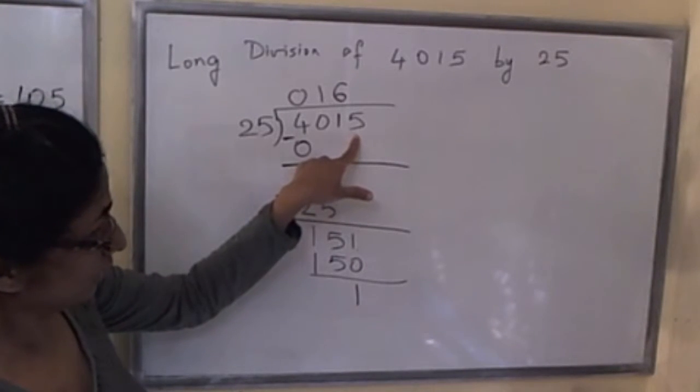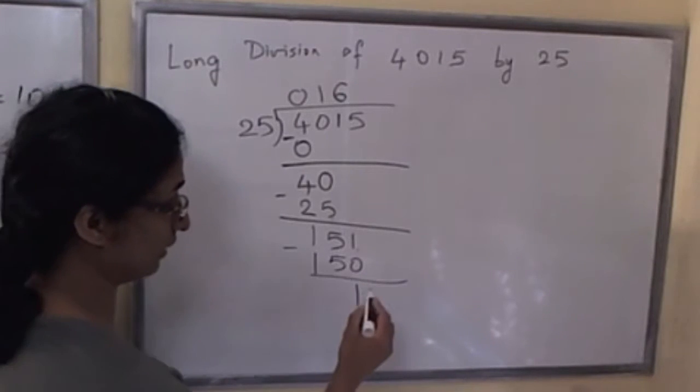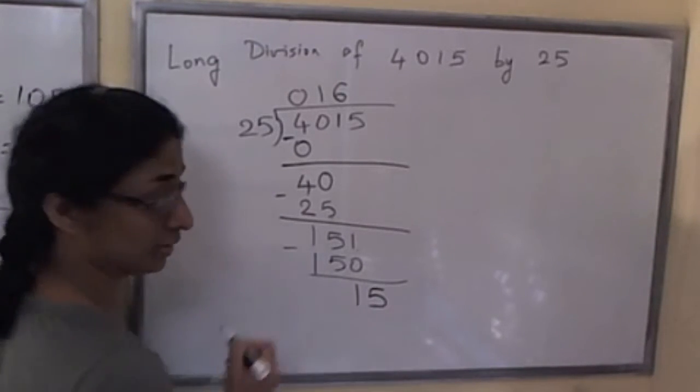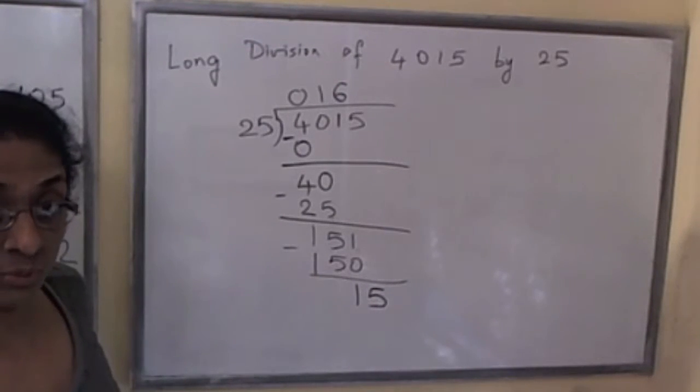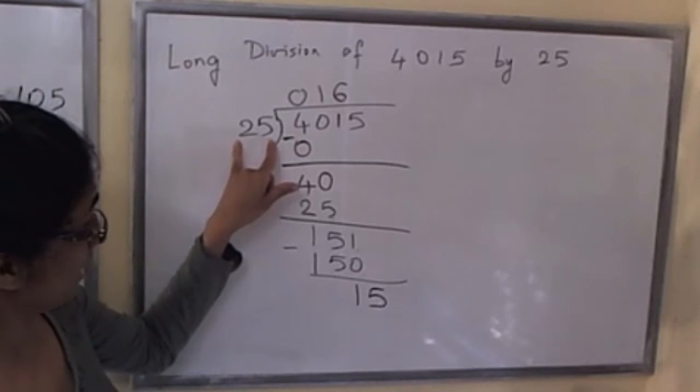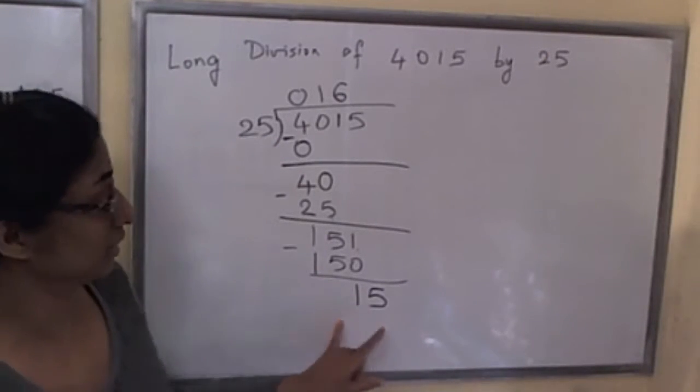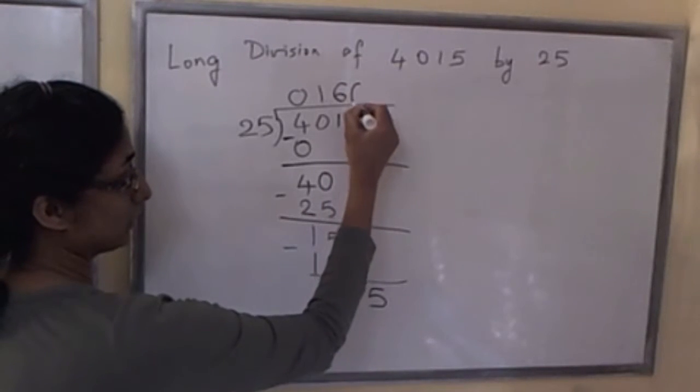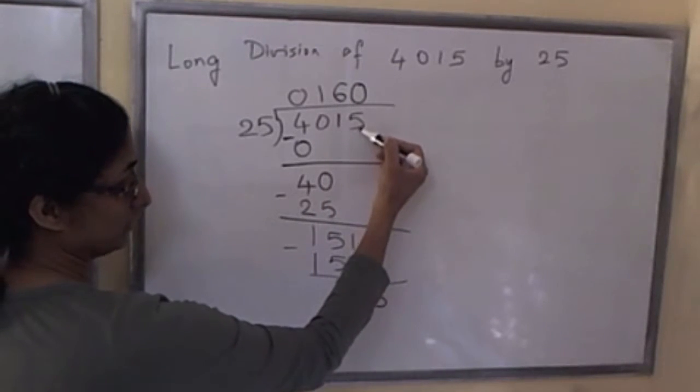And now we pull down this 5, the very last digit. 15. And now we ask the same question: what is the maximum copies of 25 in 15? Zero copies. So that's in the same column as the 5 that was brought down.